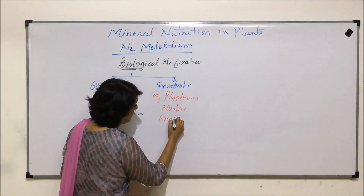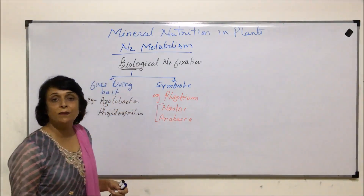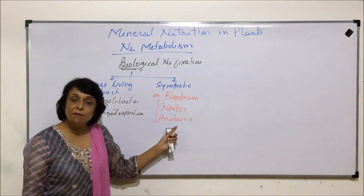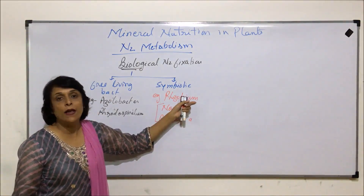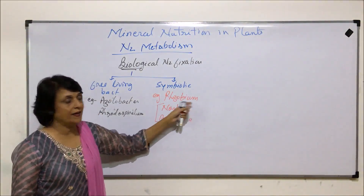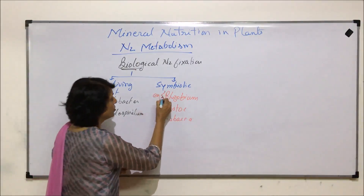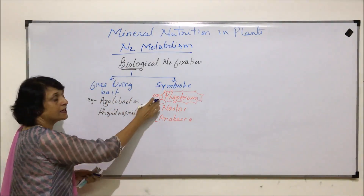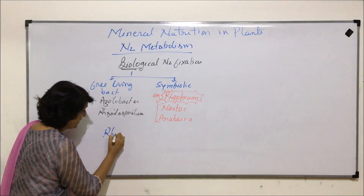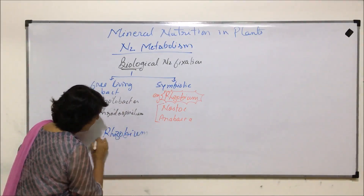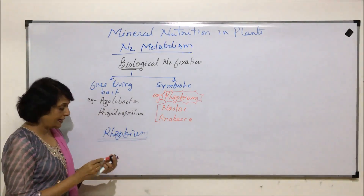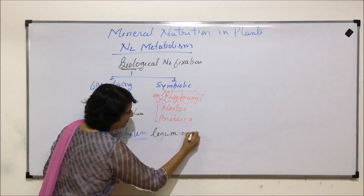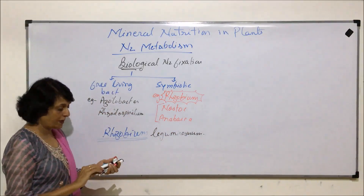In the cyanobacteria category, examples include Nostoc and Anabaena. These two — Nostoc and Anabaena — can fix nitrogen in the free state as well as in the symbiotic state, whereas Rhizobium helps in nitrogen fixation only in the symbiotic condition. We will discuss nitrogen fixation by Rhizobium in detail, but first let us understand a few things about Rhizobium.